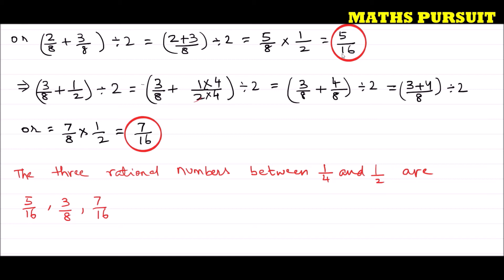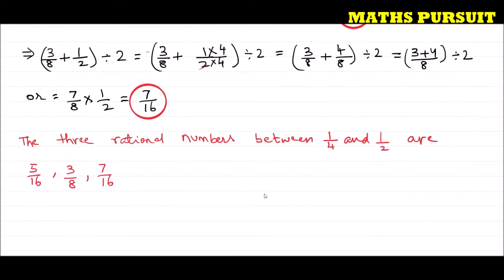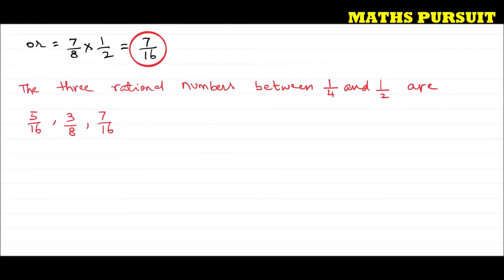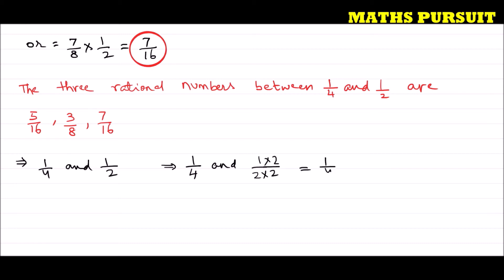Now let me show how to find these numbers using a second method — the number line method. To use this method, we first need to make the denominators the same. The denominator of 1/4 is 4 and of 1/2 is 2, so we multiply 1/2 by 2/2 to get 2/4.